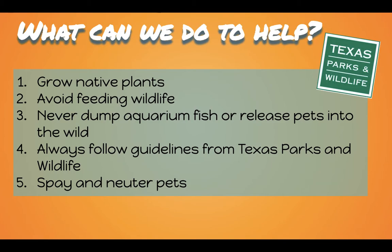The last tip is about spaying and neutering pets. When people don't spay or neuter their dogs and cats or let them out unsupervised, they can reproduce so quickly. In the spring we have so many kittens and puppies that end up in shelters because there are not enough homes for them. Spaying and neutering your pet is a simple solution so they don't create babies and end up in shelters. There are many resources with the SPCA to help you spay and neuter your pets for discounted prices or even for free.